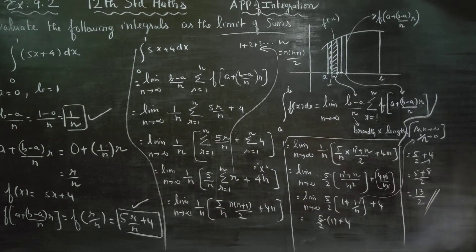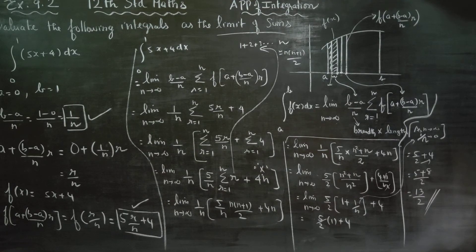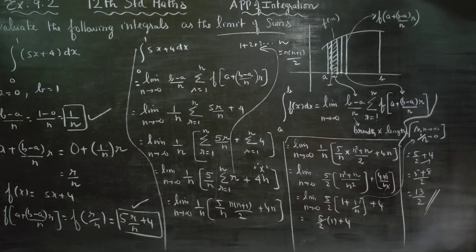Normally we find limits using upper limit minus lower limit using properties of definite integrals, which you studied in 11th standard. Instead, here we used the limit as sum — the Riemann right-hand formula: limit n turns to infinity of (b minus a)/n times sigma r equals 1 to n of f(a + (b minus a)/n into r). This is the main formula for this sum. Thank you.